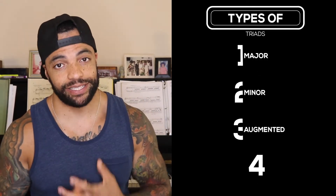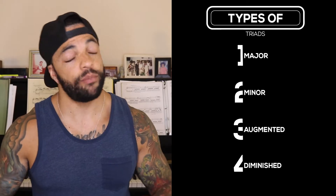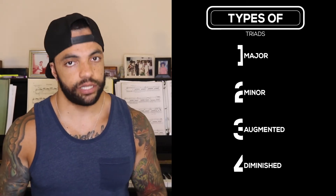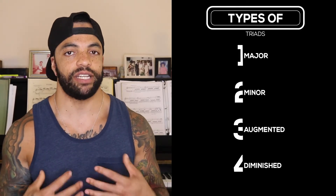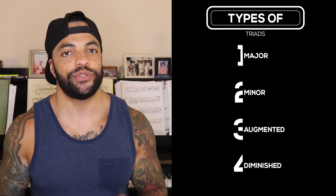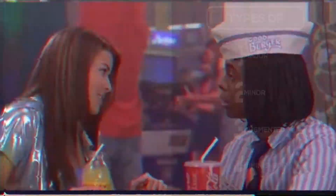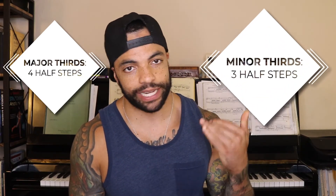Our four types of triads are major, minor, augmented, and diminished. All four are important, but the majority of music uses major and minor chords, so make sure you have a good handle on how to make those. Before we get into chord building, remember: major thirds are four half steps, minor thirds are three half steps — you have to be able to count these well and relatively easily to build our triads.